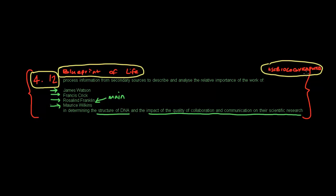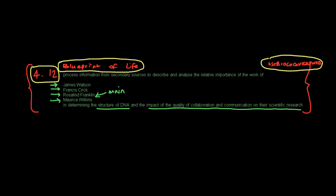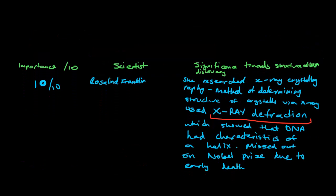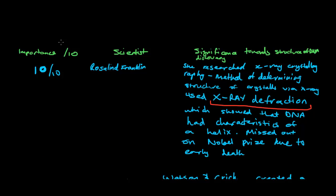Okay, so here I go. I'm just going to go down to my table that I've already drawn. So just explaining the titles to you, I have importance out of 10, meaning 10 as the most important and 0 meaning the least important. I have the scientist's name down here and the significance towards the structure of DNA discovery.